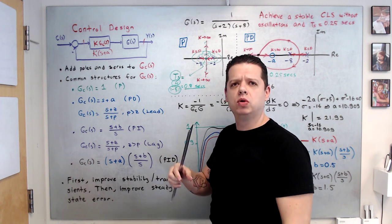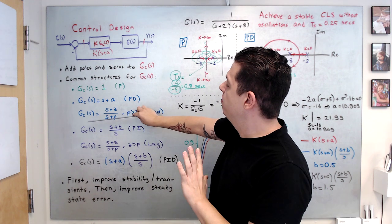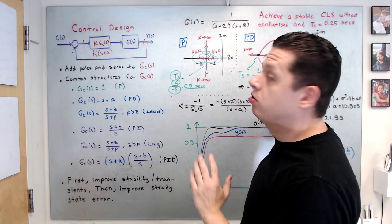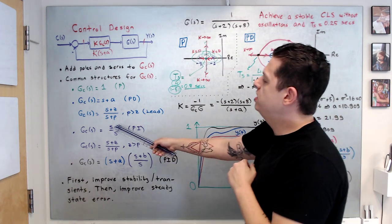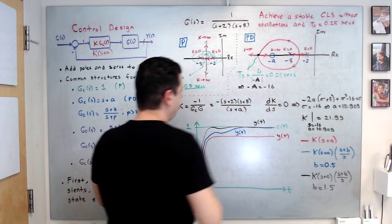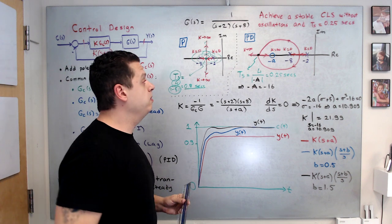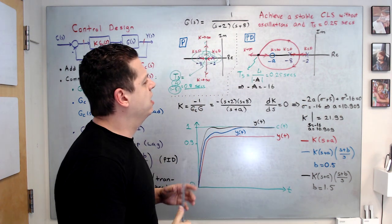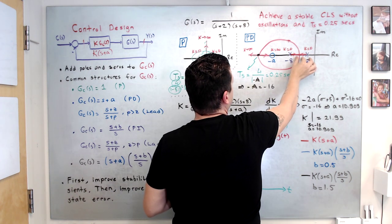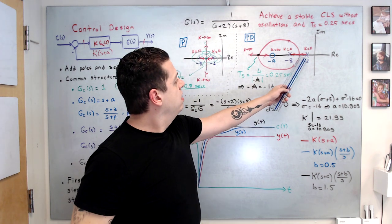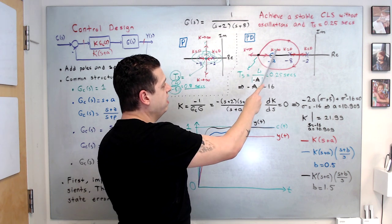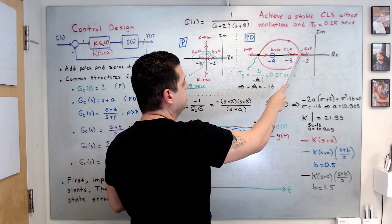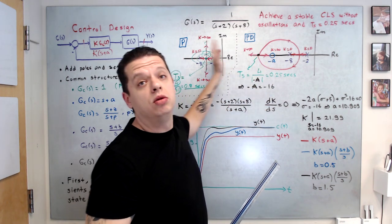PI and lag are placed close to the imaginary axis. This is the key difference between these two groups of controllers. If you want to improve transient stability and settling time, place them to the left of the plant poles. Unlike this, PI and lag poles and zeros stay close to the imaginary axis. This was an important statement to keep in mind. By placing minus a to the left, the PD compensator can pull these root locus branches to the left, which is why we put it there.